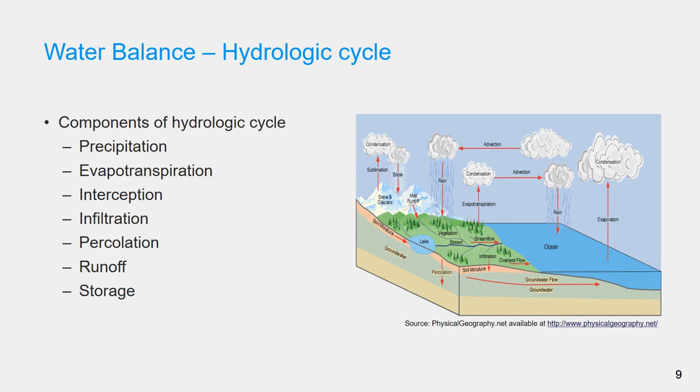And water moves from one reservoir to another via three major pathways. These are precipitation on the ground, on the earth's surface and on the ocean, evapotranspiration and vapor transport, movement of vapor from one place to another.